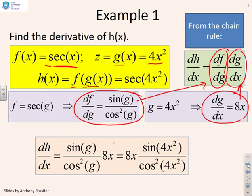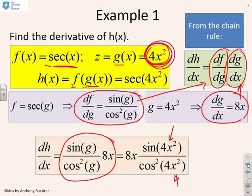So I get dh/dx is sin g over cos squared g times 8x. And of course what I can do is recognize that g is 4x squared. It's given there. So wherever I have a g, I can substitute in 4x squared. And so I get 8x times sin of 4x squared over cos squared of 4x squared.